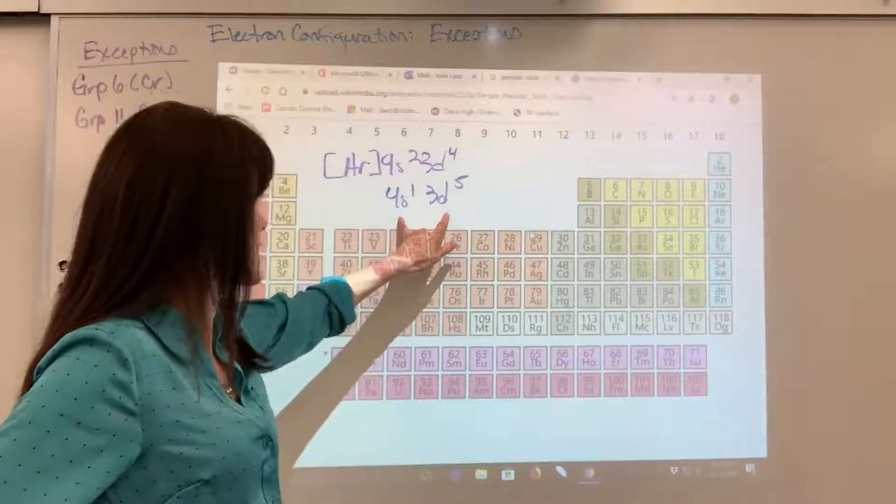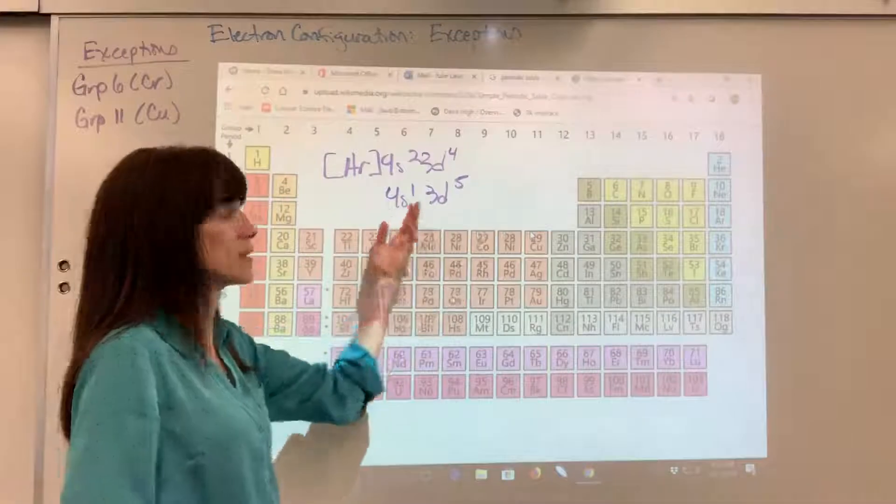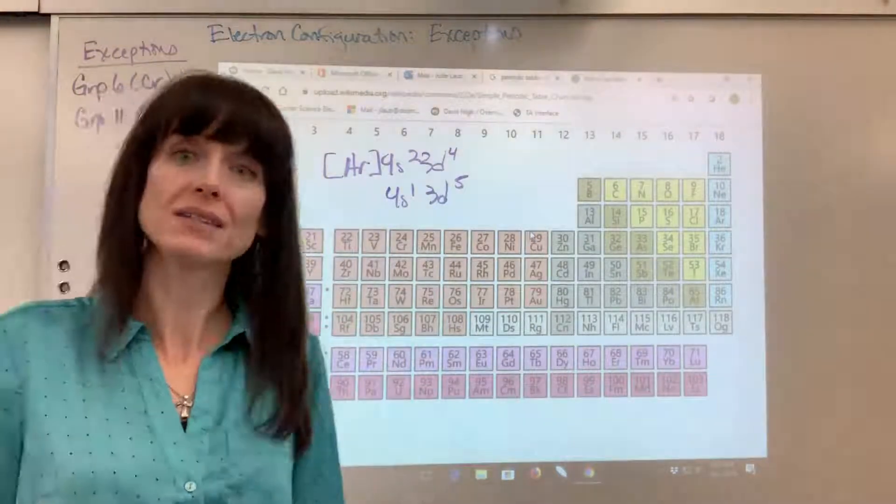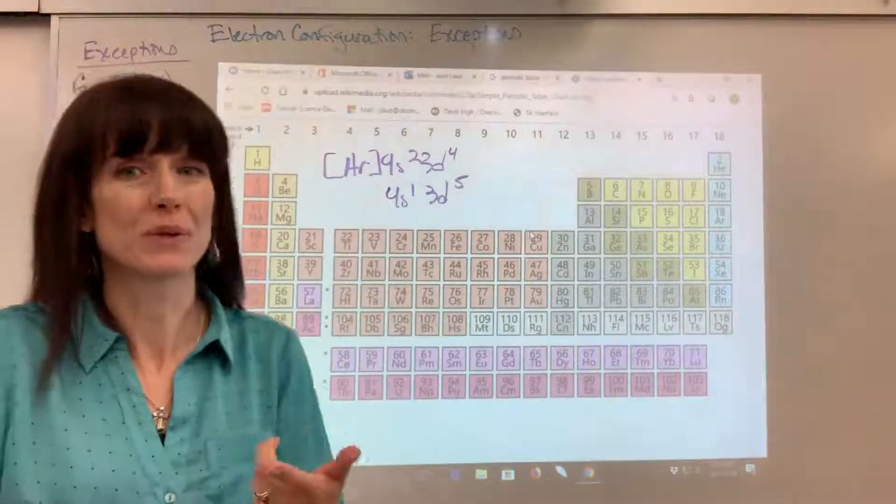It's our understanding that this breaks the Aufbau principle. The electrons didn't fill the lowest energy level. We didn't fill that S block because of stability. And really, the best place to see this is orbital notation.